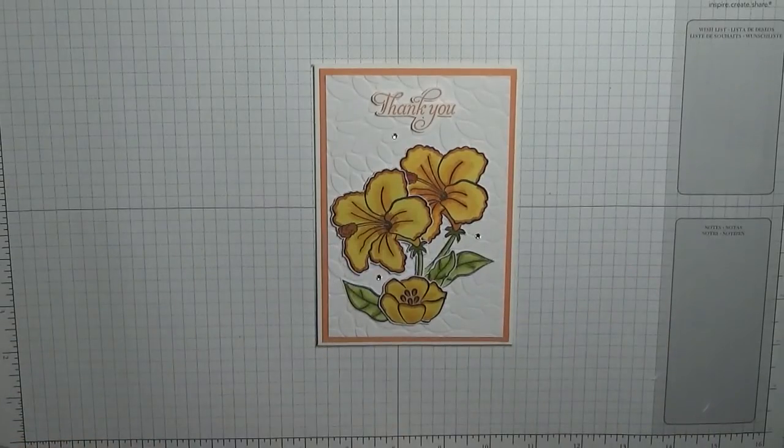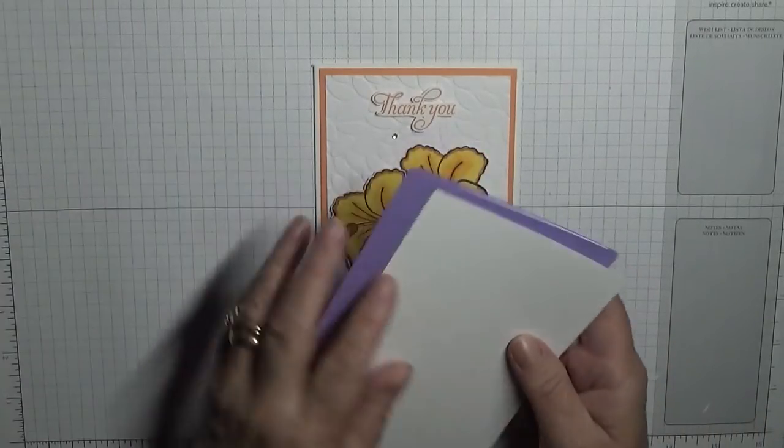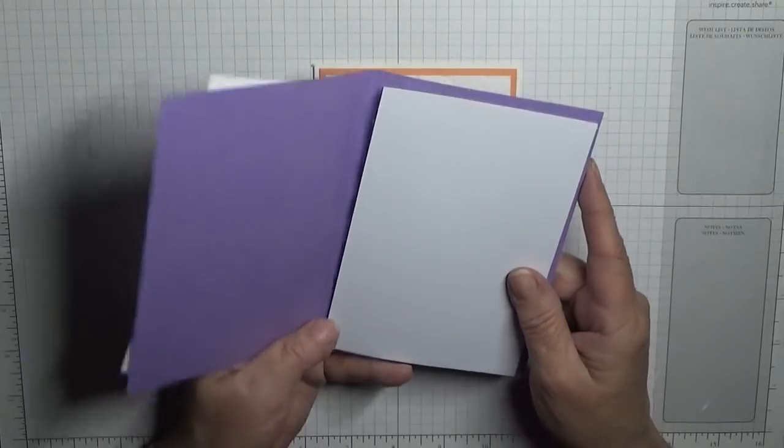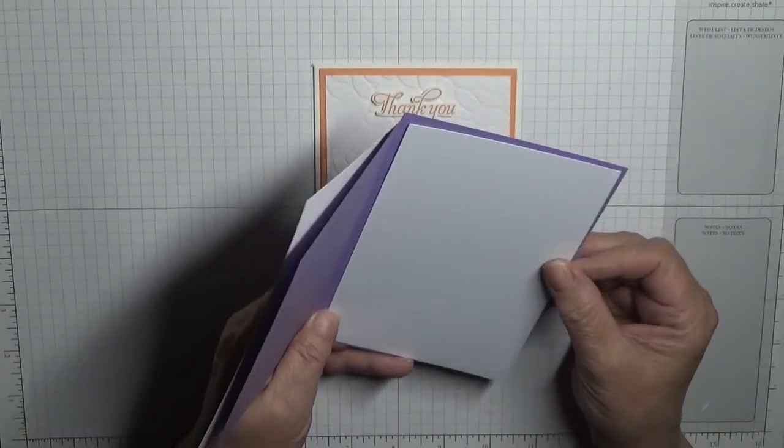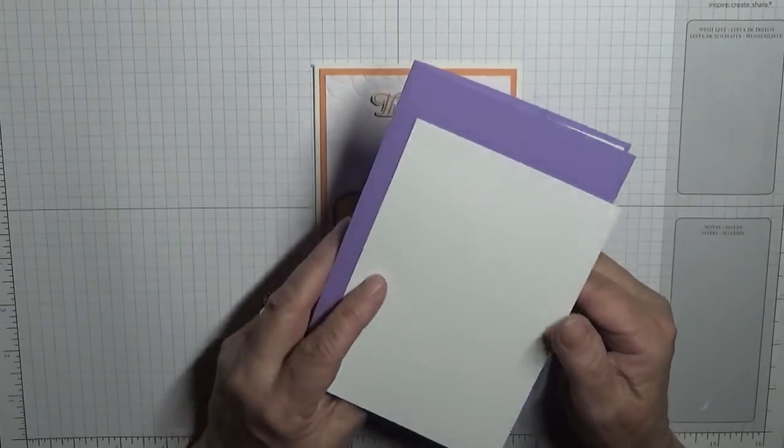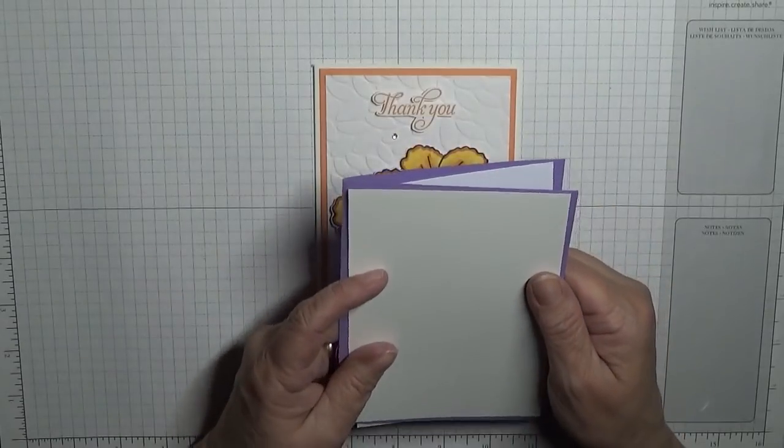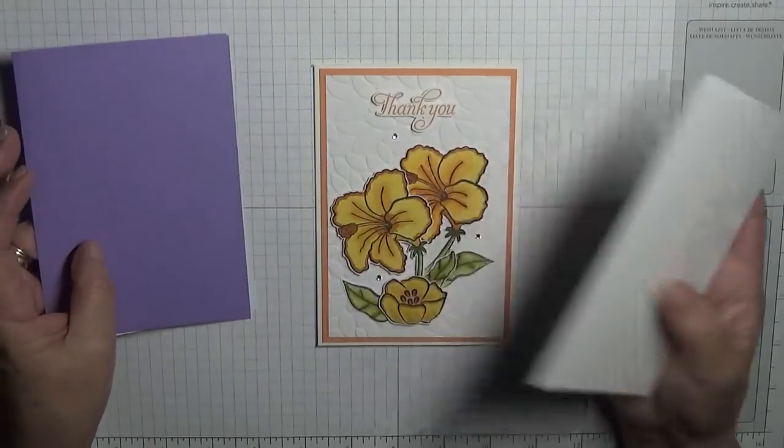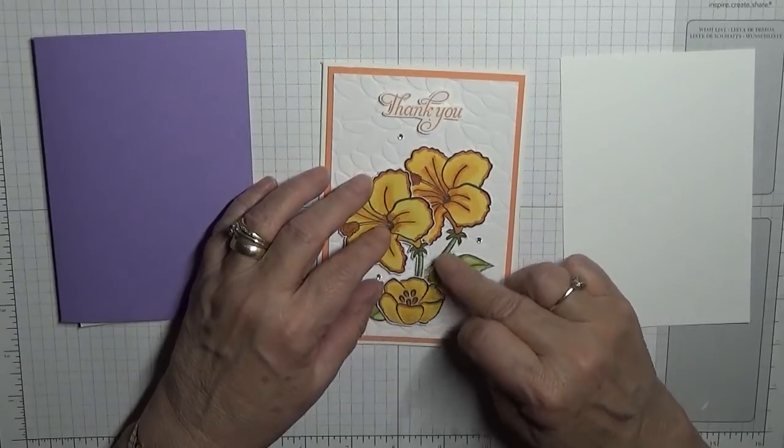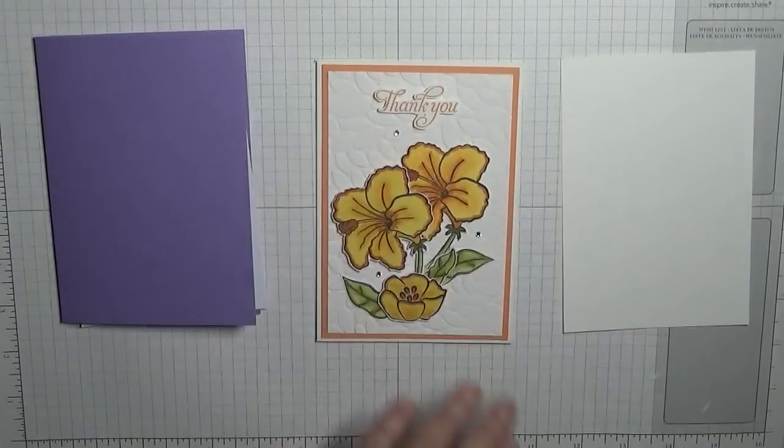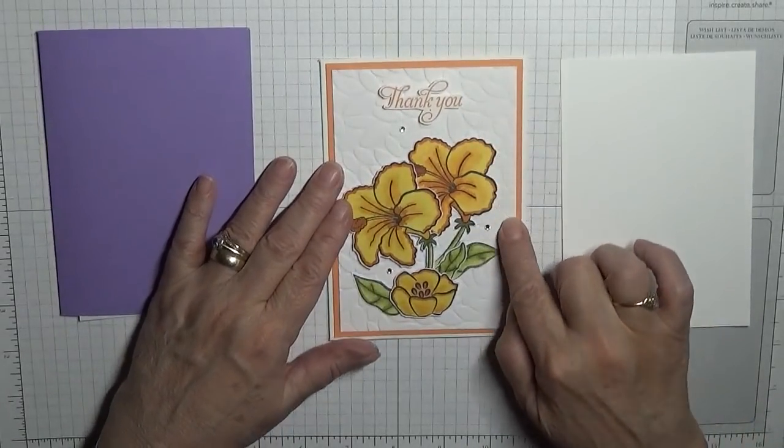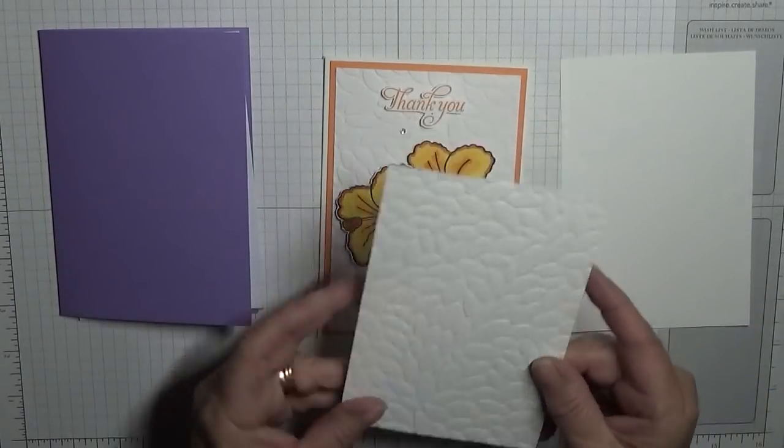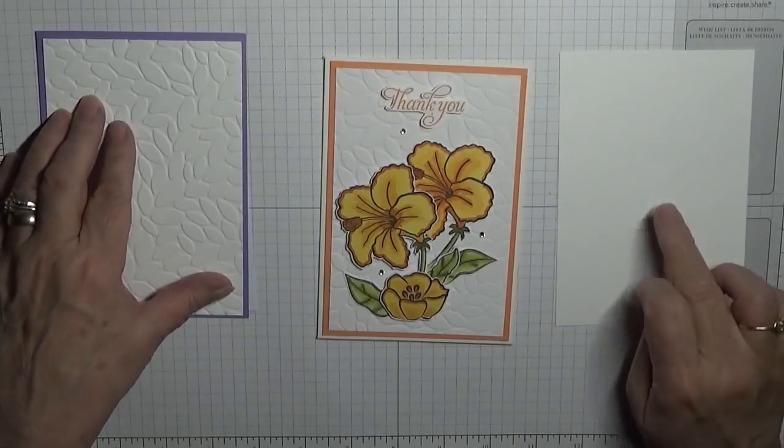So to get started we are going to need a card base of eight and a quarter by five and seven eighths scored and folded in half and I'm using Highland Heather for this one. You need two pieces of white cardstock, one for the middle one for the front, and they measure three and seven eighths by five and five eighths. You'll just need some scrap to do your stamping and coloring. On this one I have used Stampin' Up's petal embossing folder.